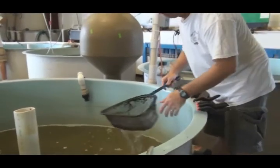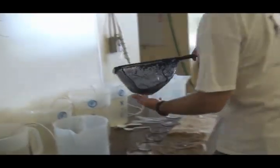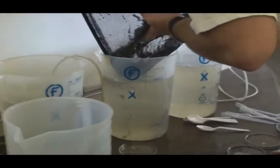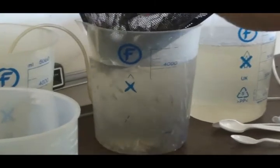Back in the hatchery, the manager fills larger beakers with 4,000 milliliters of water. He then adds a larger number of our fish to the beakers, being careful not to add any water to the beakers. As the fish are added, the water level increases.